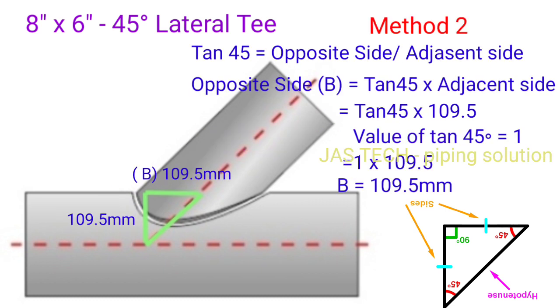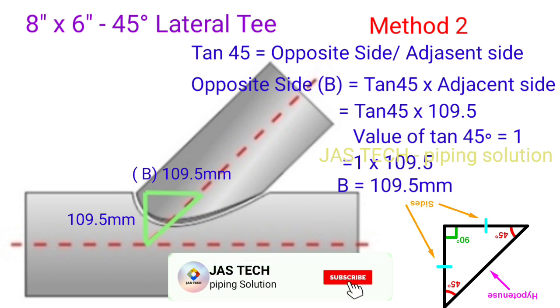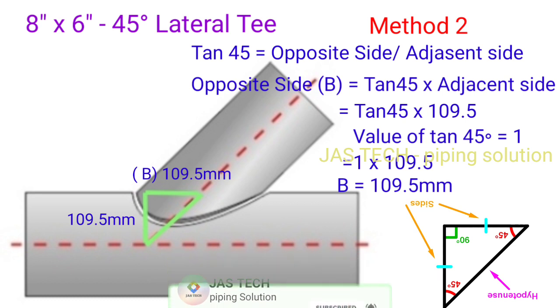Method 2 to find out B length uses the same trigonometry formula: tan 45 equals opposite side divided by adjacent side. Opposite side B equals tan 45 times the adjacent side. Adjacent side we know is 109.5mm. Value of tan 45 equals 1, so B equals 109.5mm.